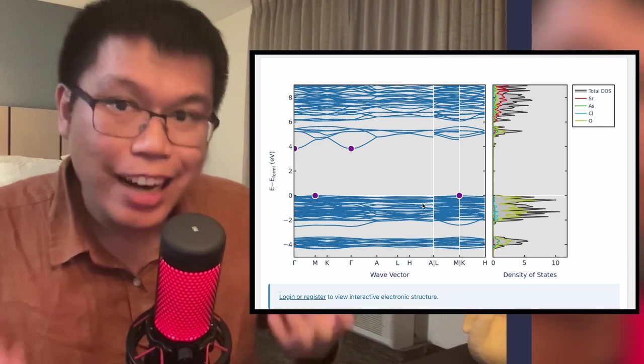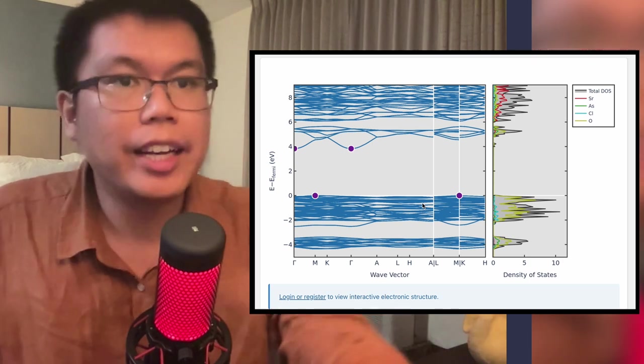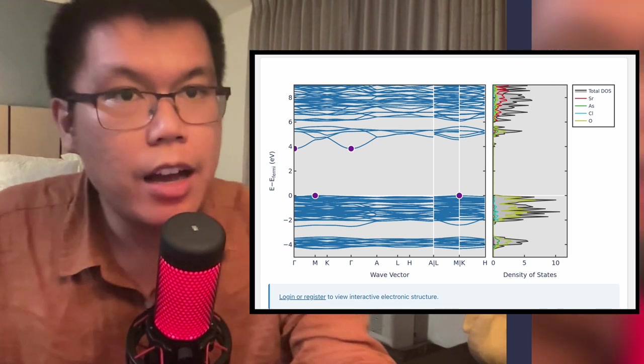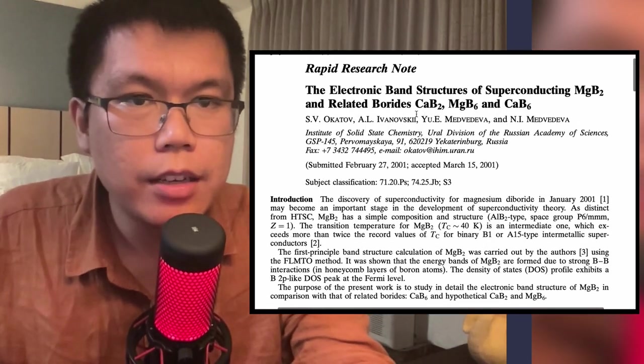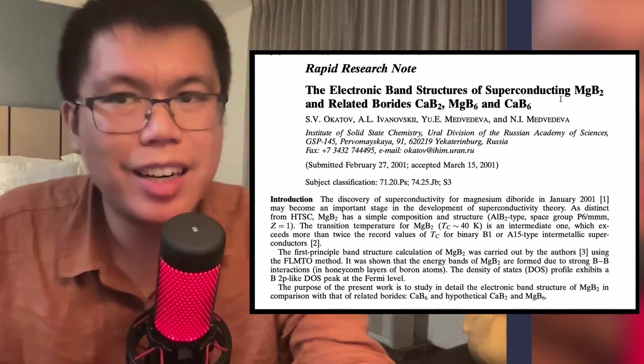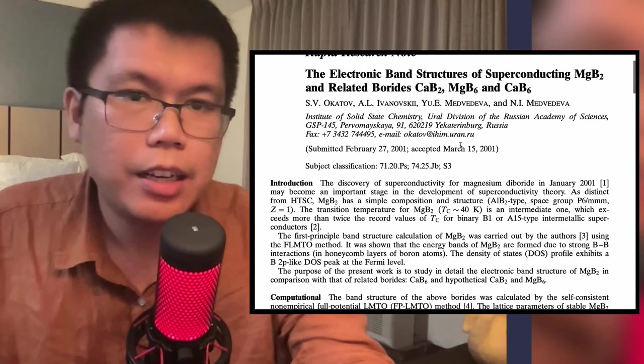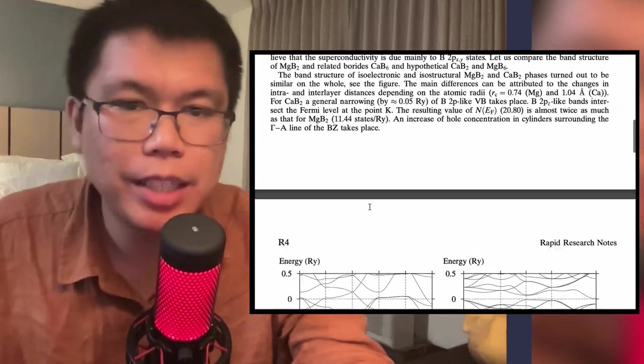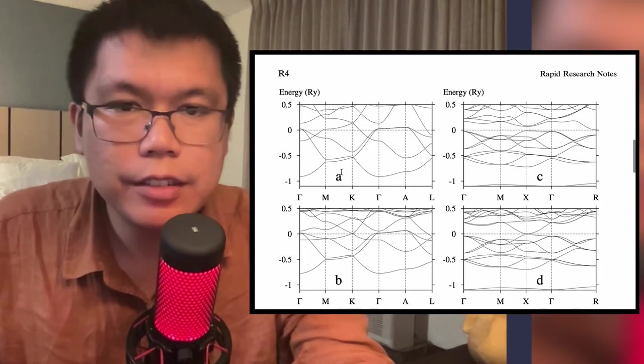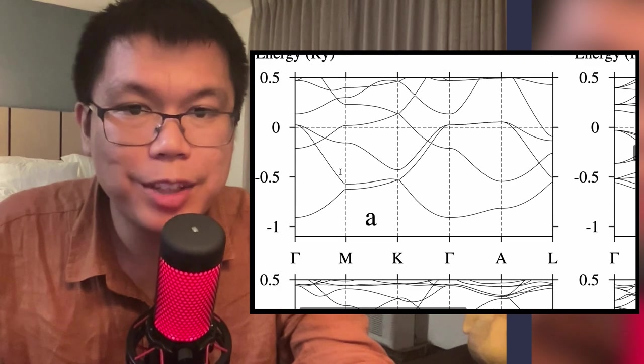What does an actual superconducting band structure though look like? So this is another real superconductor, magnesium diboride. So magnesium diboride is a superconducting material that was found in 2001. This is a theory paper from around the same time. And in the top left.